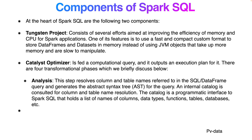The second component is the Catalyst Optimizer. It is fed a computational query and outputs an execution plan. There are four transformational phases. The first is the Analyze phase, which resolves column and table names referenced in the SQL or DataFrame query and generates an abstract syntax tree for the query. The internal catalog is consulted for column and table name resolution.